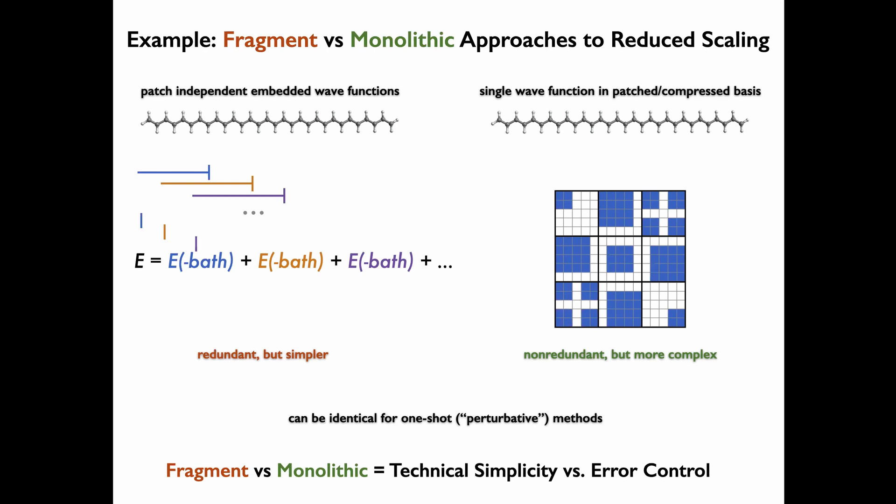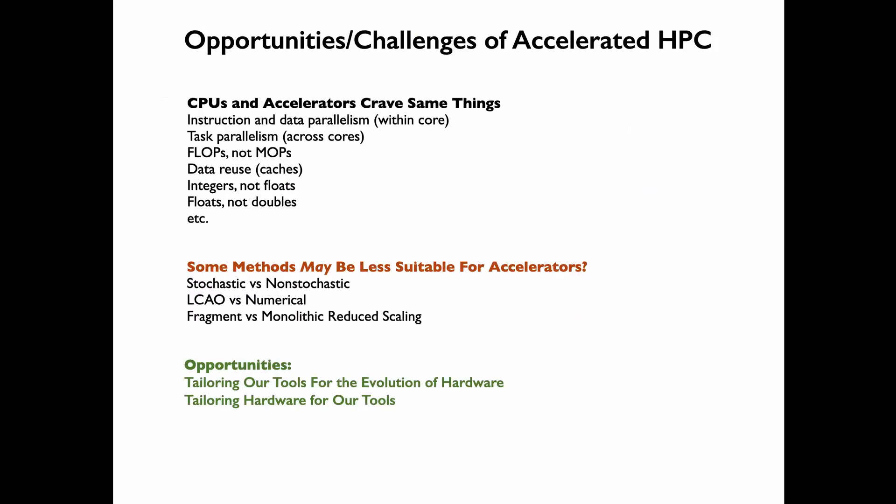For iterative methods, each fragment needs a bath around it, and those baths will overlap for nearby fragments, so unavoidably there's redundancy. What I call monolithic approaches — such as PNO coupled cluster — are non-redundant but more complex, because the wave function is compressed in a more complicated representation. To me the choice between them is not really about ease of parallelism — I think both can be parallelized — but really about technical simplicity versus error control. Error control is easier in monolithic approaches, but fragment approaches win on technical simplicity.